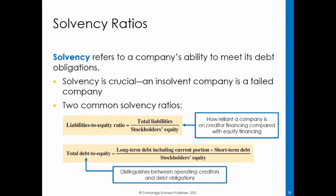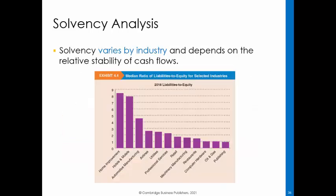Two common solvency ratios are liabilities to equity and total debt to equity. The liabilities to equity ratio conveys how reliant a company is on credit financing compared with equity financing. A higher ratio indicates a less solvent company. One drawback of the liability to equity ratio is that it does not distinguish between operating creditors, such as accounts payable, and debt obligations. We can refine our analysis by excluding operating liabilities from the numerator. This solvency ratio assumes that current operating liabilities will be repaid from current assets, such that lenders should focus on the relative proportion of debt and equity. As the chart illustrates, solvency ratios vary by industry.